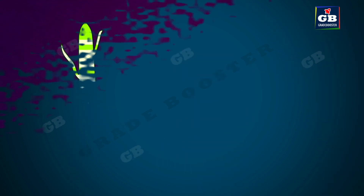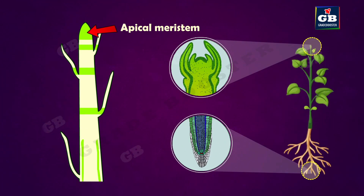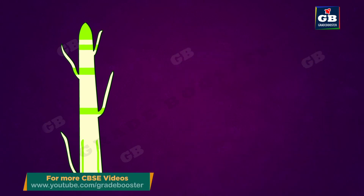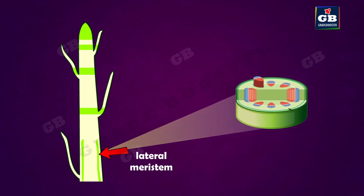Apical meristem: this meristematic tissue is present at the tips of stem and root. This apical meristem helps the stem and roots to increase their growth lengthwise. The second one, lateral meristem, is found in the cork cambium and vascular cambium of plants.